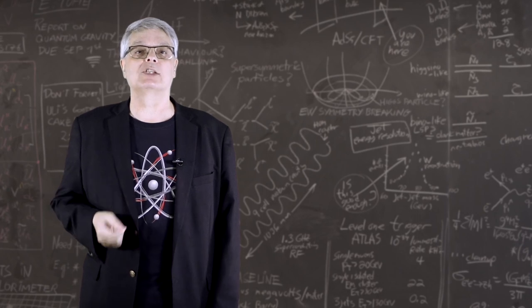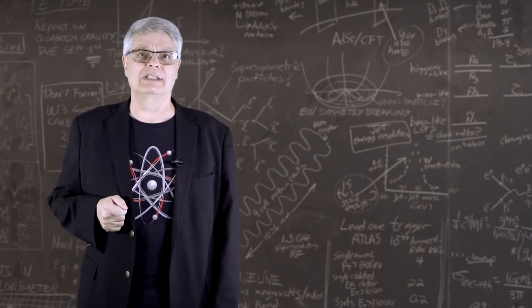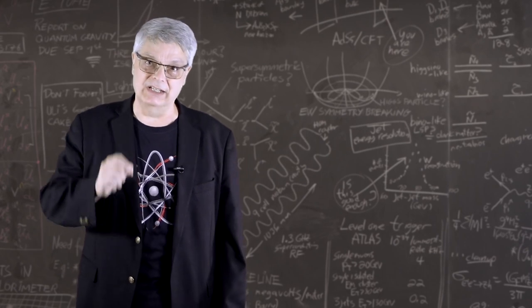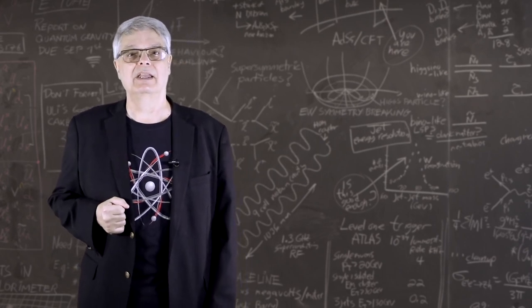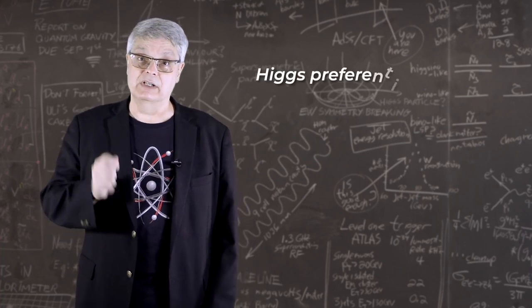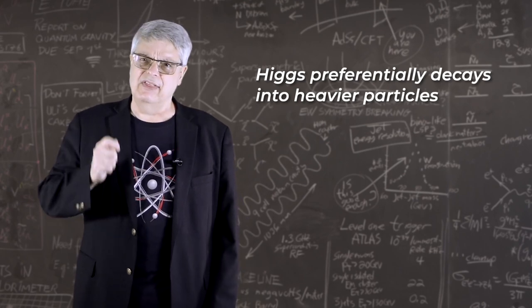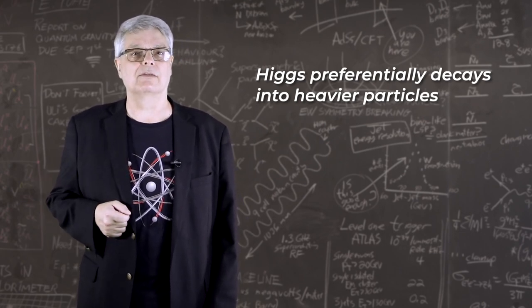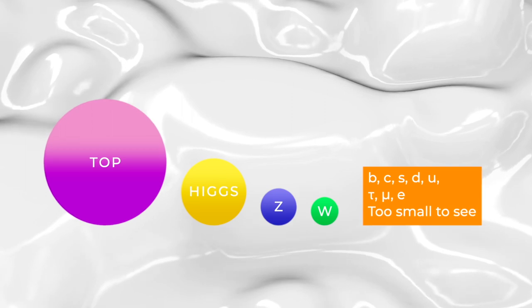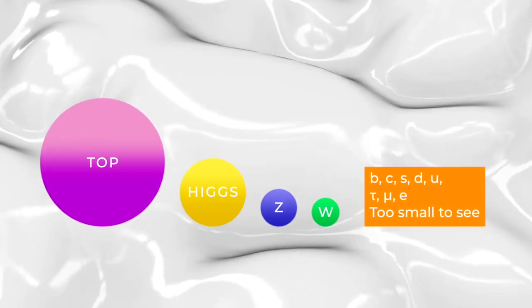The Higgs boson interacts with all fundamental particles that have mass. Indeed, it's more accurate to say that particles have mass because they interact with the Higgs boson. And the ones that interact more with the boson have more mass. Because of that, the Higgs boson prefers to decay into heavier particles. The heaviest particles of the standard model are the top quark, followed by the Higgs boson itself, the Z and W bosons, the bottom quark, and then all the rest.